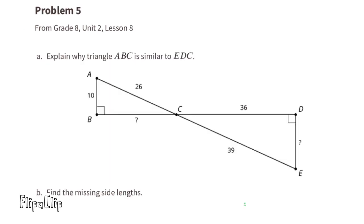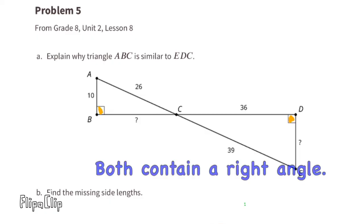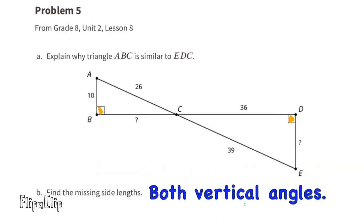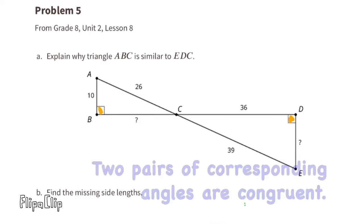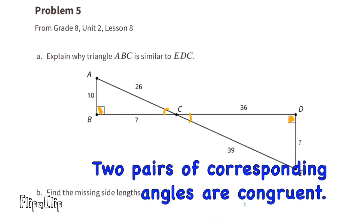Problem number 5, from 8th grade Unit 2 Lesson 8. Part A: Explain why triangle ABC is similar to triangle EDC. Both triangles contain a right angle, and angles ACB and ECD are vertical angles. The triangles are similar because two pairs of corresponding angles are congruent.